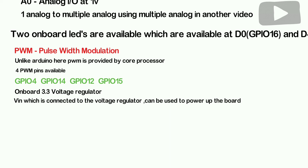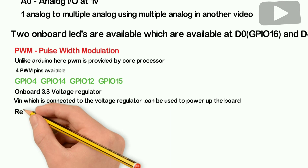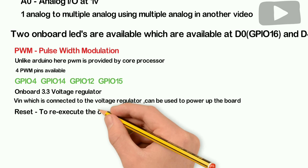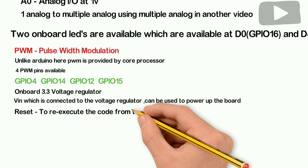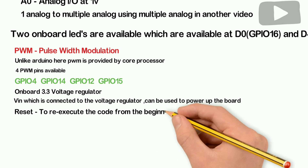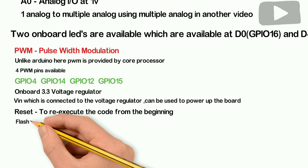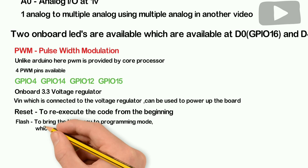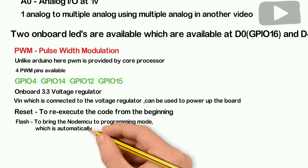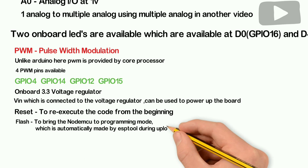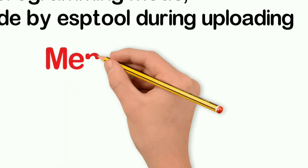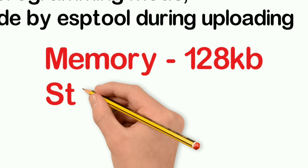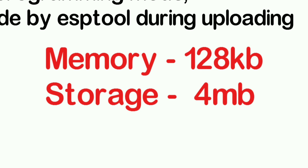There are two onboard buttons: reset and flash. The flash button is used to put the chip into programming mode. Looking at memory and storage, the programming memory is 128KB and the storage is 4MB, which is good for typical use cases.